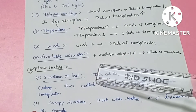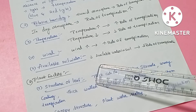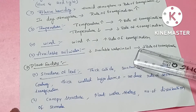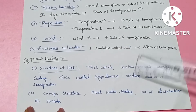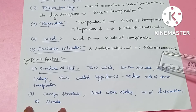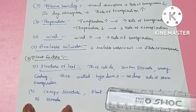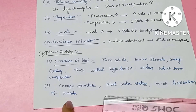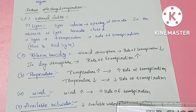Soil water availability: when water is low, the rate of transpiration is low. Plant factors include structure of the leaf — thick cuticles, sunken stomata, deep stomata, waxy coating of leaves, and thick-walled hypodermis — all of which reduce the rate of transpiration. Other plant factors include canopy structure, plant water status, stomata number, and number of open stomata.